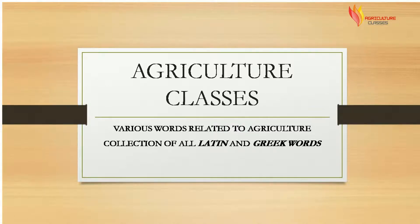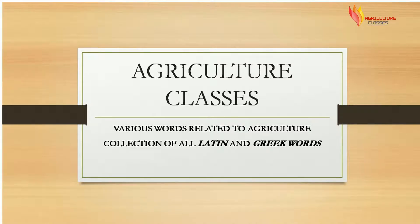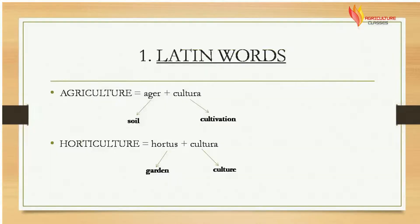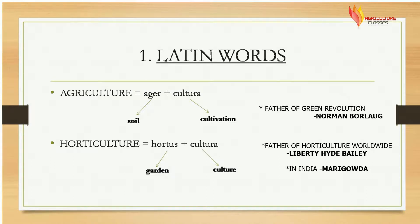As we know that agriculture is a broad term having a lot of knowledge, techniques, and employment also. Agriculture is done all over the world. Every country has its own regional languages and every language has its own meaning. In such cases we have a lot of words to describe a single meaning. Thus Latin and Greek words are a standard parameter to understand a particular meaning, as they are spread all over the world. Here are some common words mentioned.